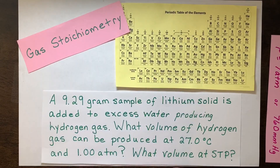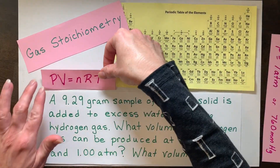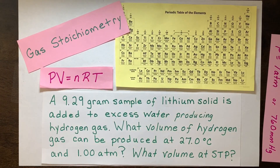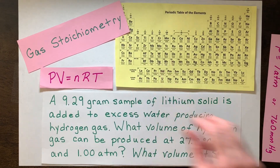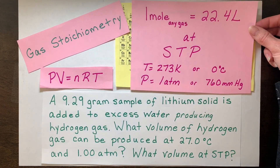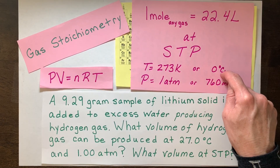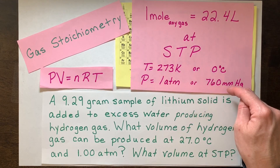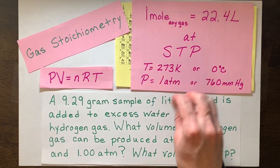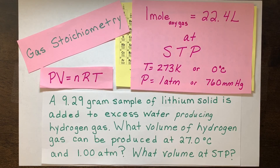I'm going to go through how to do gas stoichiometry two different ways. One is if we have an ideal gas, we can use the fact that PV equals NRT. Secondly, if our ideal gas is at 273 Kelvin or 0 degrees Celsius and 1 ATM, which could also be 760 millimeters of mercury, every gas is going to equal the same volume, which is 22.4 liters.